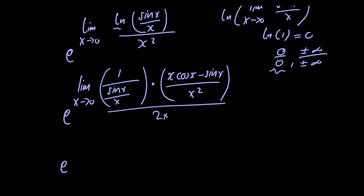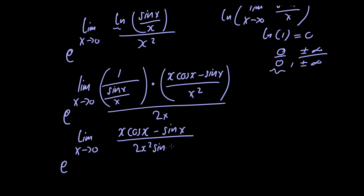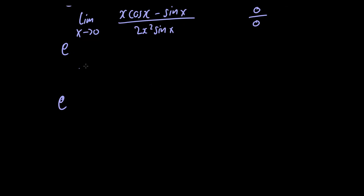So we just have x times cosine of x minus sin of x, divided by x squared, and of course in the denominator we just have 2x. We can simplify this expression. Doing so, we have e raised to the limit as x approaches 0 of x times cosine of x minus sin of x, divided by 2x squared times sin of x. Notice if we were to just let x go to 0 again, we would have 0 in the numerator and 0 in the denominator.